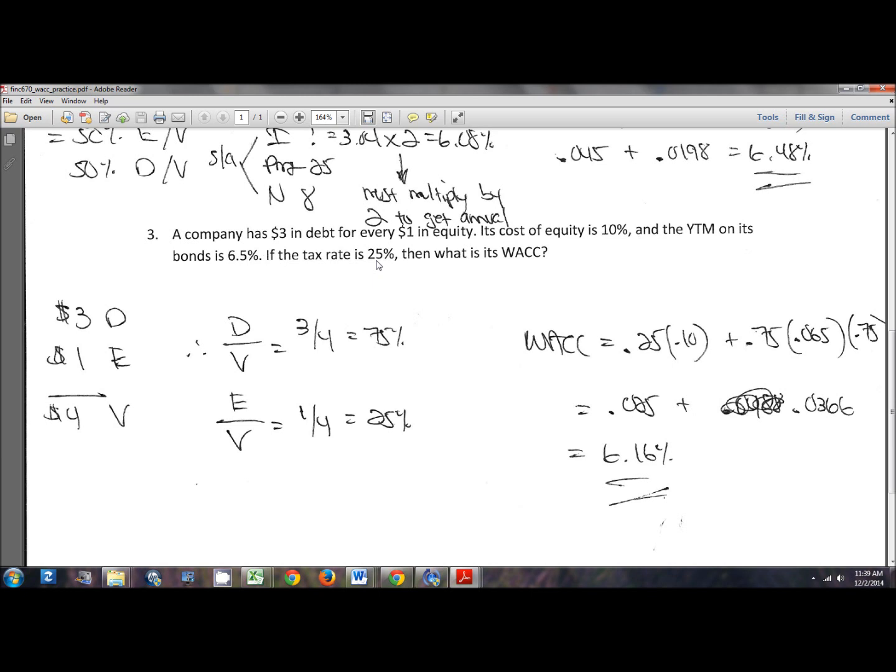This problem is very simple once you get past this $3 in debt for every $1 in equity. I wanted you guys to be exposed to maybe a slightly different way of being presented this information, which is more like what you'll see in Finance 680. So if you have $3 in debt and $1 in equity together, that's $4 in firm value, right?